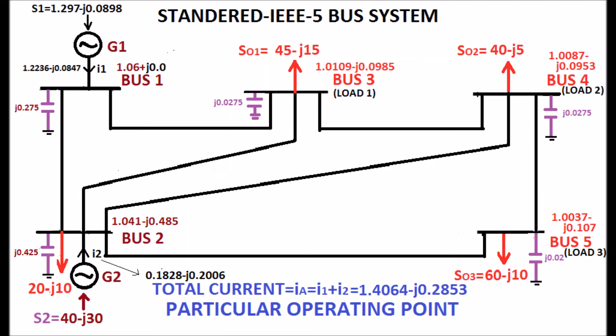A particular operating point of the system is displayed. Bus 1 is considered as slack bus. Other bus voltages are marked. The slack bus power is also shown in the display, which is calculated from the load flow solution.